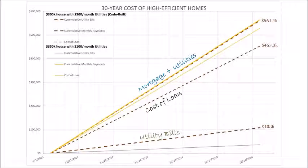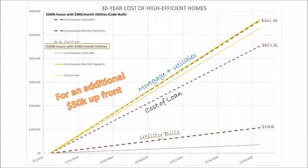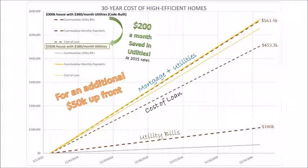We're going to look at maybe investing $50,000 into a house so that you can lower your utility bills to $100 a month. This is called passive house design — we know the recipe to get this done.